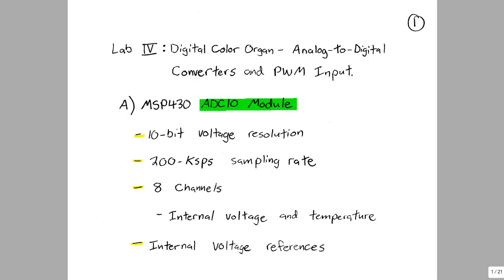So the MSP430 has an analog-to-digital converter called the ADC10. It has a 10-bit voltage resolution and 200 ks per second sampling rate. 10 bits means that the number of voltage steps possible is 1024, and 200 ks per second means that the maximum frequency you can sample is 100 kHz.